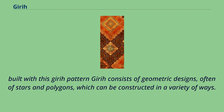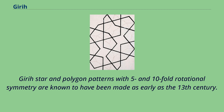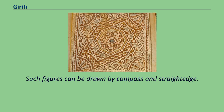Girih consists of geometric designs, often of stars and polygons, which can be constructed in a variety of ways. Girih star and polygon patterns with 5- and 10-fold rotational symmetry are known to have been made as early as the 13th century, and such figures can be drawn by compass and straight edge.